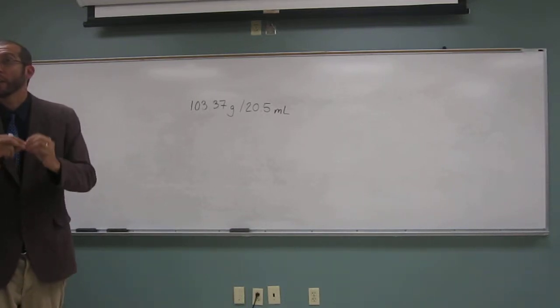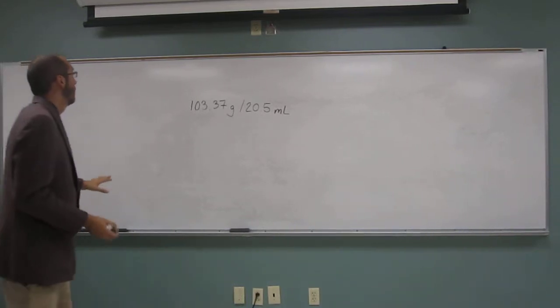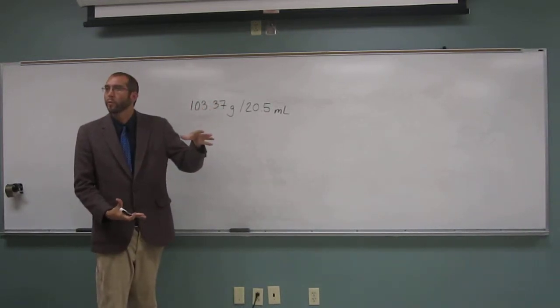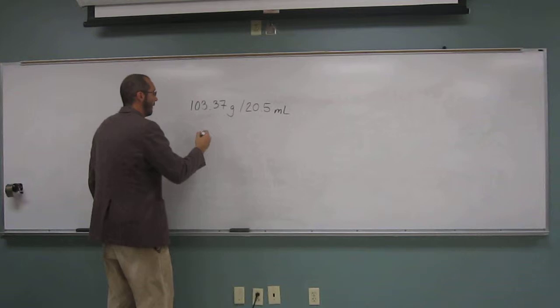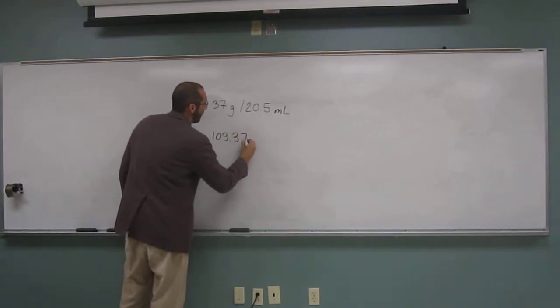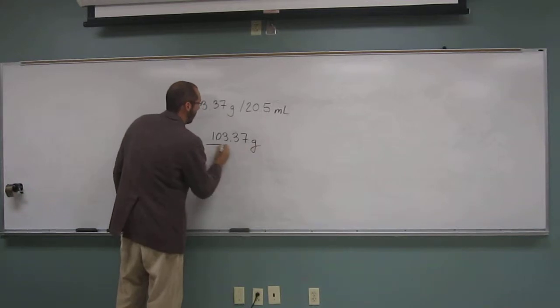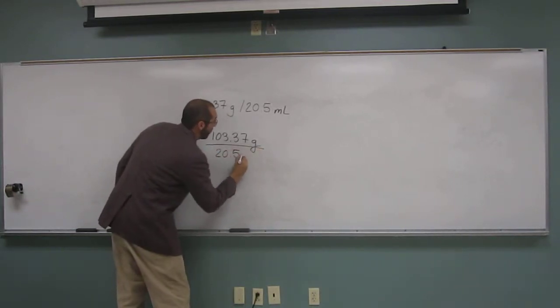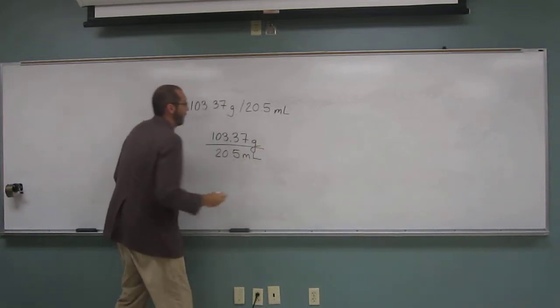Because it's much more convenient to write on one line. But when we're working it out, it helps us out visually to kind of expand this. So let's do that. So 103.37 grams divided by 20.5 milliliters.